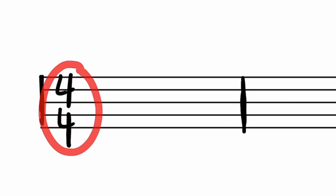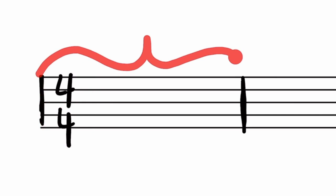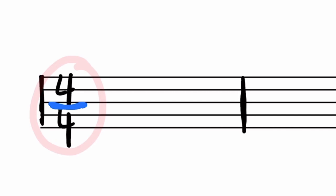The second piece of the time signature you need to know is that the bottom number tells us what type of note gets one beat. One way to think of this is like a fraction — you could say four fourths, or four quarters. We're literally saying that we can fit four quarter notes in this measure, or in other words, a quarter note gets one beat.